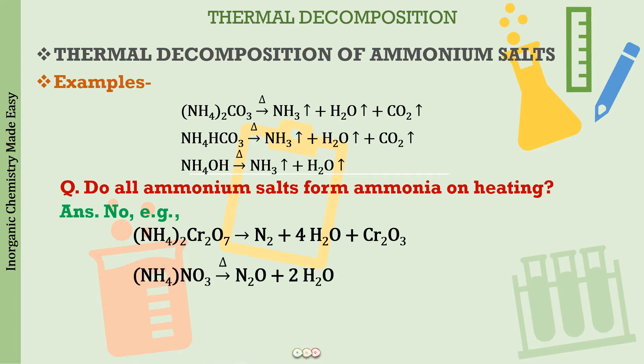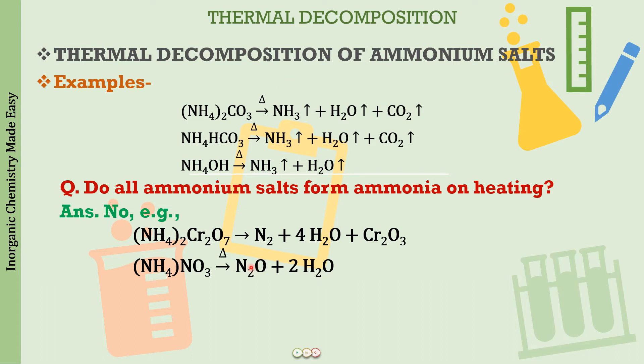Let's see another example: ammonium nitrate. When ammonium nitrate is heated, we get N2O gas and water. So we can observe three different kinds of products: in one case ammonia is released, in another nitrogen is released, and in another N2O is released. How do we remember all of these?